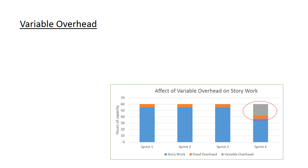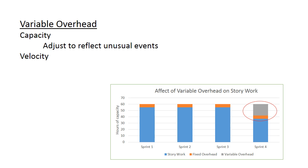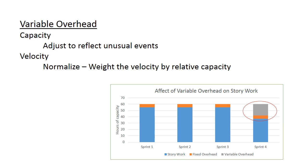What about variable overhead? You need to adjust your capacity for unusual events, deducting capacity hours for vacation and so on. The velocity can then be weighted by the relative capacity to show a more consistent view. You should not create stories to cover vacation, release planning, or to give credit for completing vacation, holidays, or all-hands meetings on your burndown. Similarly, you shouldn't get credit on your sprint burndown for holidays, vacations, or attending an all-hands meeting. So you shouldn't create tasks or stories for these variable overhead items.